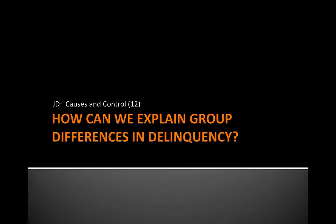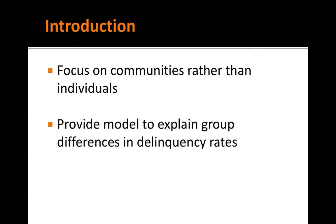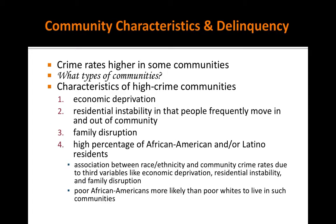The final theory chapter looks at how we can explain group differences in delinquency. Here are delinquency rates. Characteristics of high-crime communities include economic deprivation,